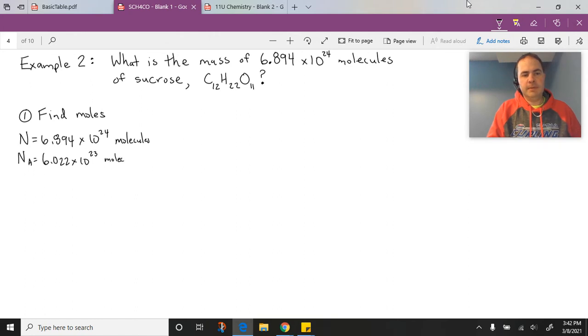So we know there would be that many molecules of our sugar per mole of the sugar. So once we've got that information, we can find our number of moles. Remember, our formula is N divided by Avogadro's constant.